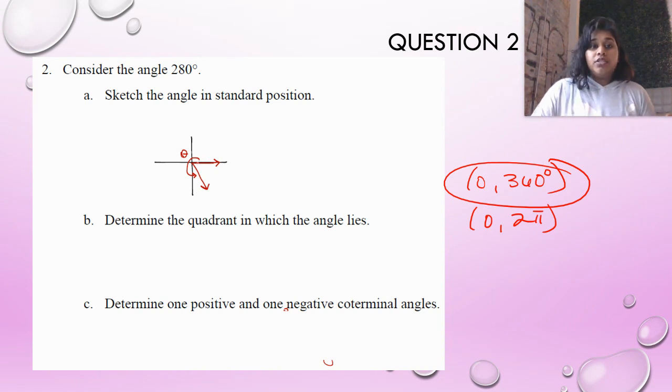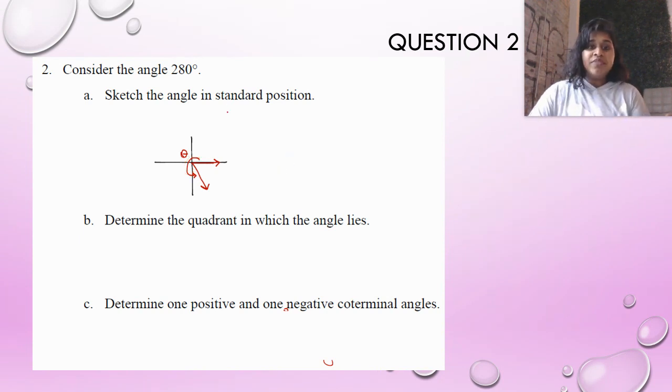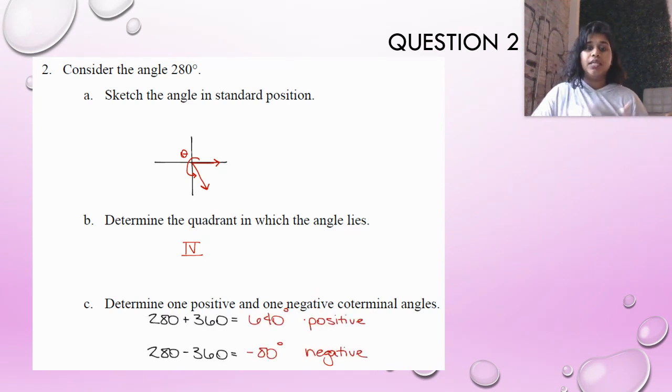0 to 280 does go in this direction, so we're good to go there. Determine which angle it lies. 1, 2, 3, 4. Ta-da! We're in quadrant 4. And then adding 1 positive, 1 negative means add 360, subtract 360. Ta-da! That's it. Let's move on to the second topic. So there was topic 1. Topic 2,